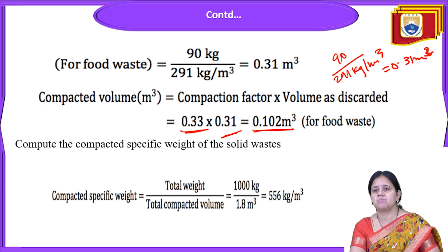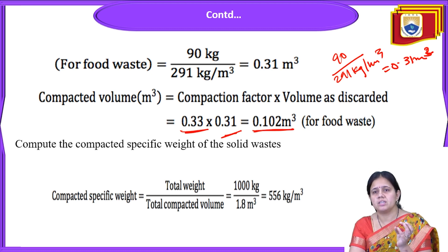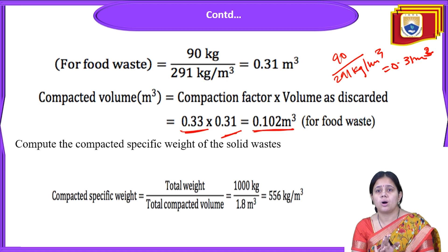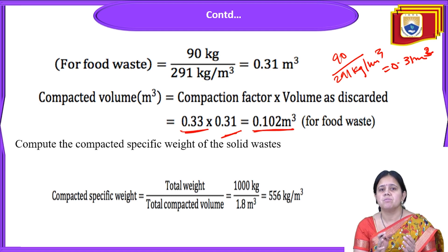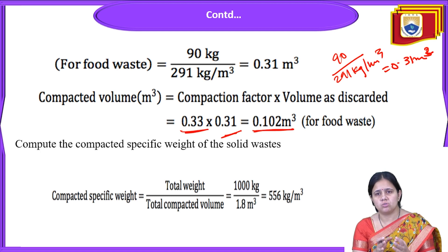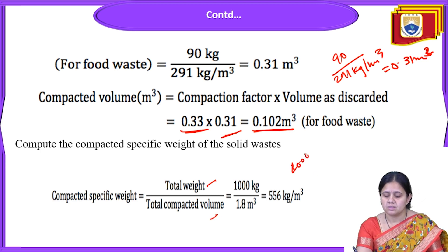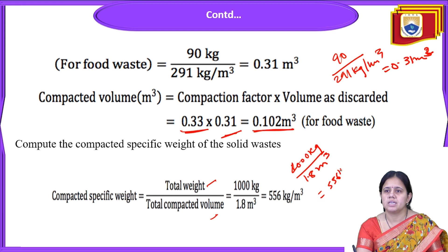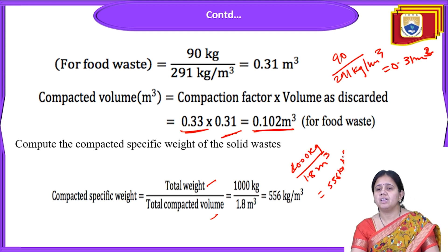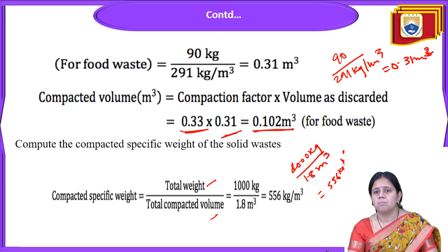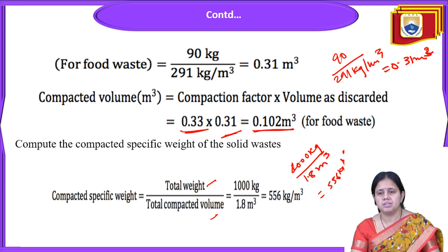We then compute the compacted specific weight of the solid waste. Since we dispose solid waste in a compacted manner, it takes less space in the landfill. The compacted specific weight = total weight ÷ total compacted volume = 1000 kg ÷ 1.8 m³ = 556 kg per meter cube.